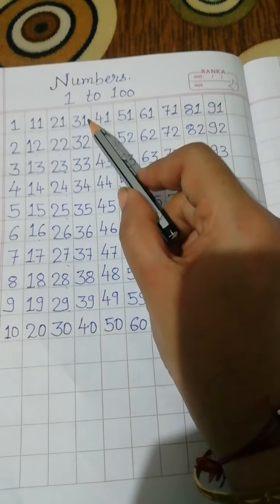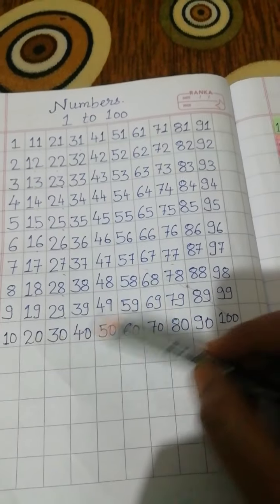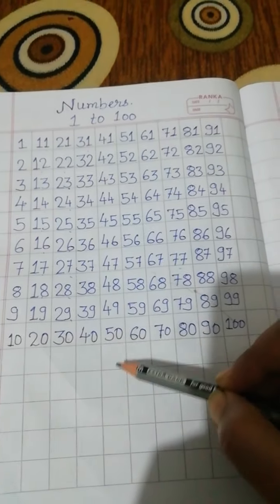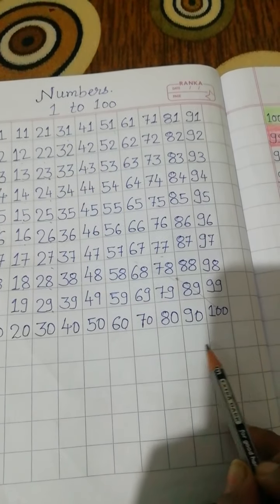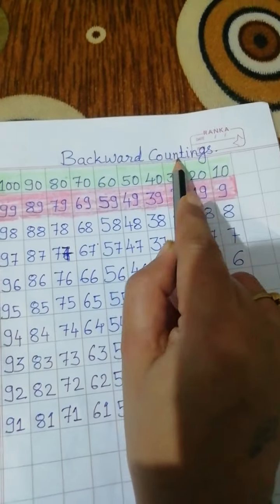Like this way you can write from 31 to 40, 41 to 50, 51 to 60 and so on till 100. Now coming to the topic we are going to learn today - backward counting.